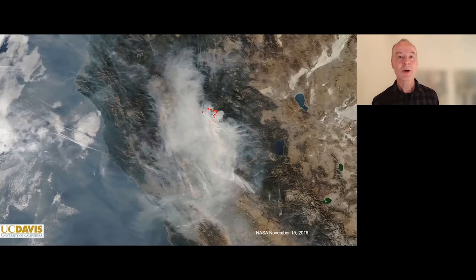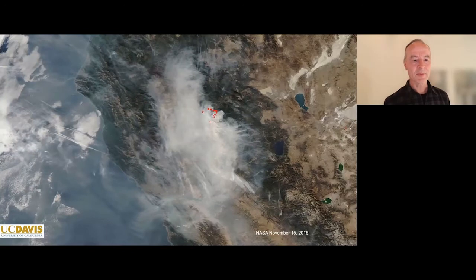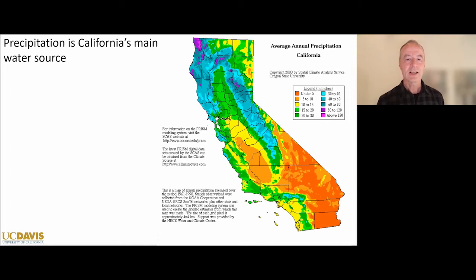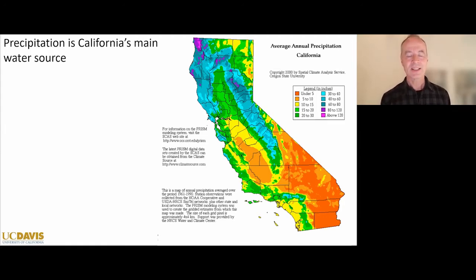Many of you have probably heard more about the fires in California than our water landscape. When we talk about water, we really have to talk about precipitation and its distribution in this westernmost state in the continental United States, on its southwestern border between Mexico and Oregon to the south and north, and west of Nevada and Arizona.